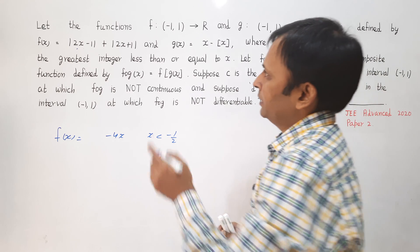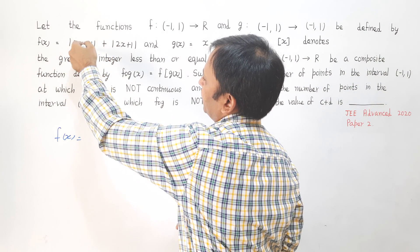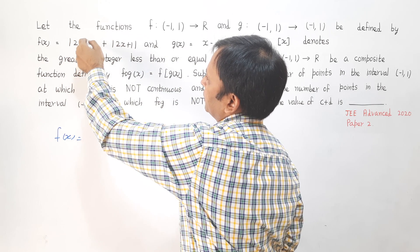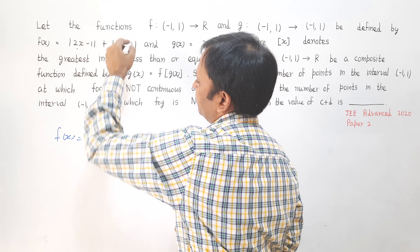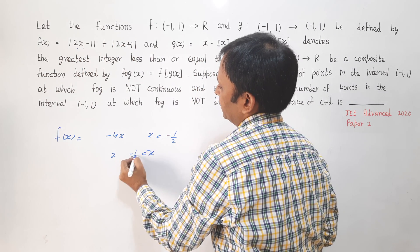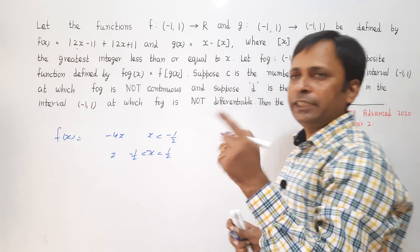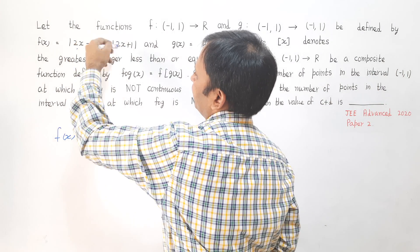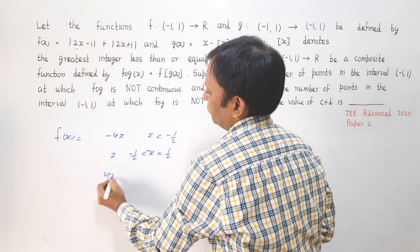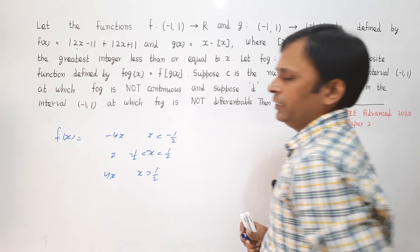When x lies between −1/2 and 1/2, the term (2x − 1) is negative and (2x + 1) is positive, so f(x) = −2x + 1 + 2x + 1 = 2. When x > 1/2, both terms are positive, so f(x) = 2x − 1 + 2x + 1 = 4x.